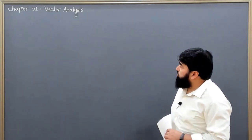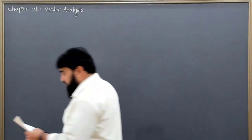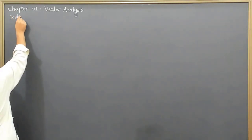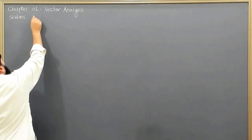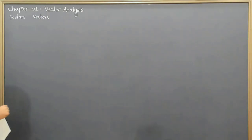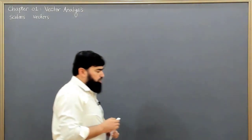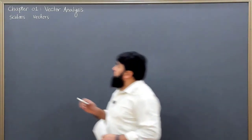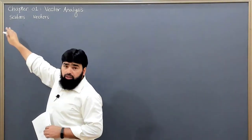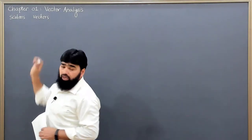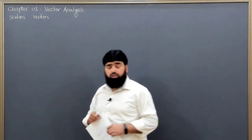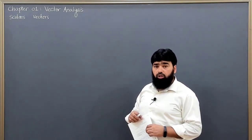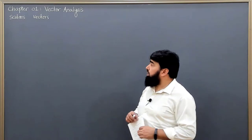We will start with vector analysis. We know that we have two kinds of physical quantities. One we call scalars and the other is vectors. Physical quantities are those quantities which we can measure. Those physical quantities which can be perfectly described by their magnitudes only we call scalar physical quantities. Those quantities which require, in addition to the magnitude, a direction for their complete specification, we call vectors.